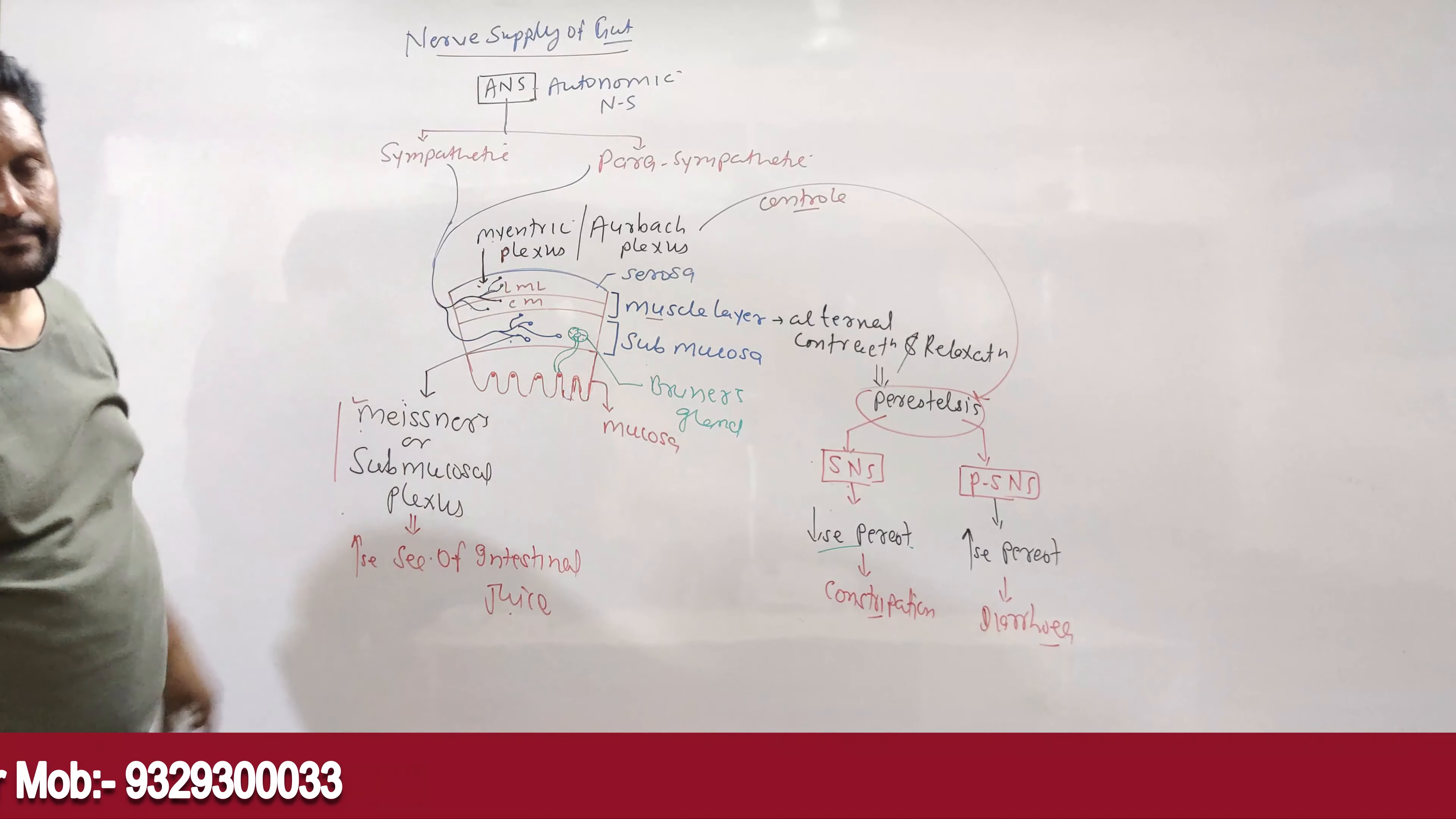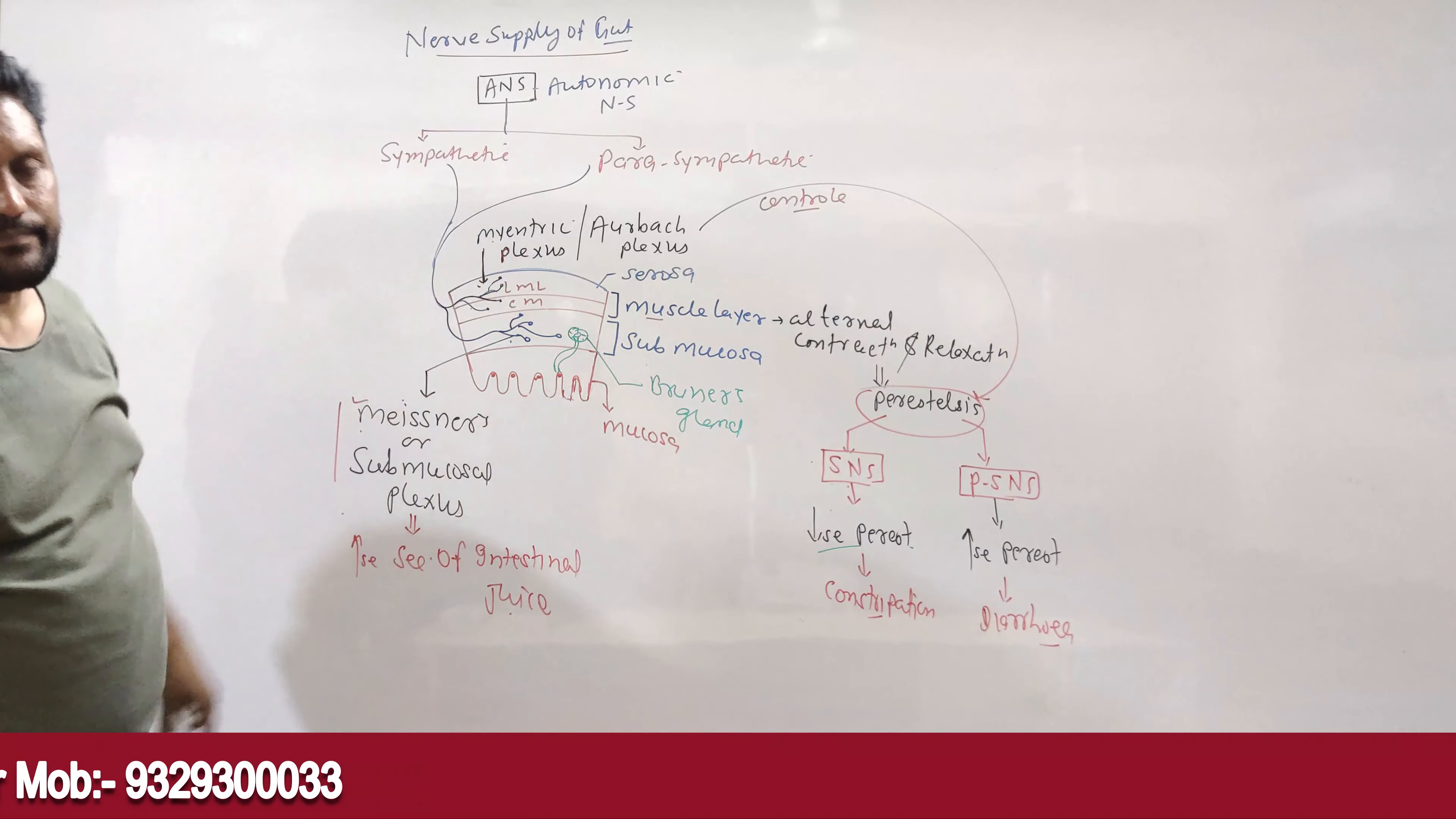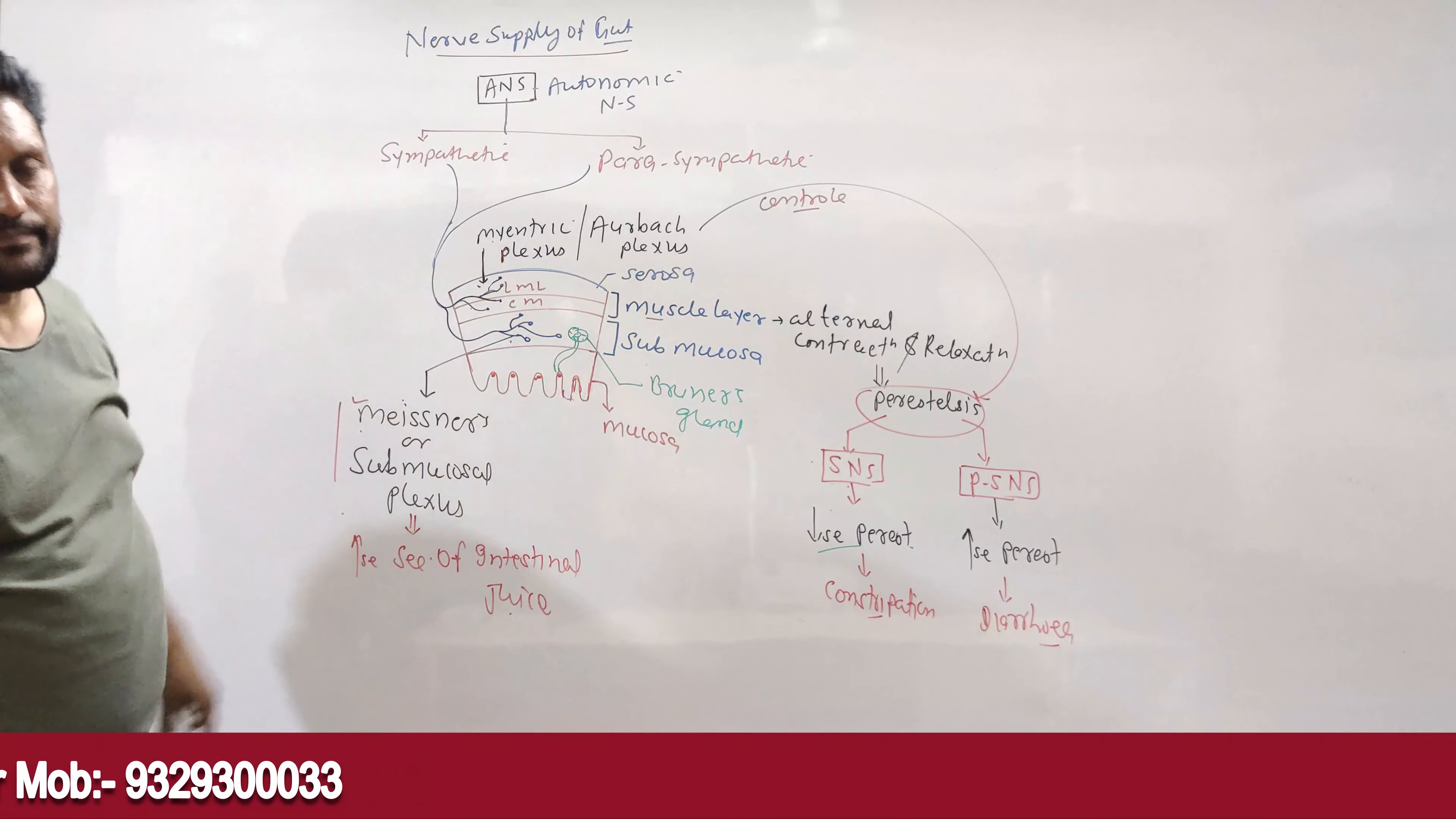Peristalsis is decreased when SNS is stimulated leading to constipation and PSNS is a stimulator. This is about the nerve supply of the elementary canal. Is it clear?